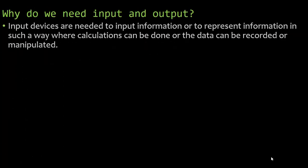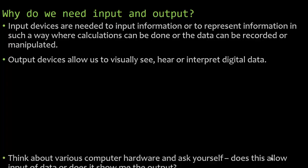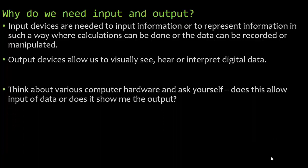So why do we need input and output? Input devices are needed to input information, or to represent information in such a way where calculations can be done or data can be recorded or manipulated. Output devices allow us to visually see, hear, or interpret digital data. When figuring out if something is an input or output device, ask yourself: does this allow input of data, or does it show me the output?